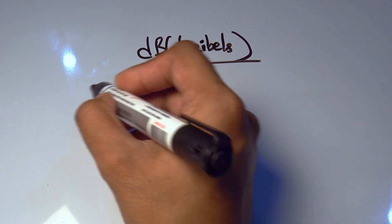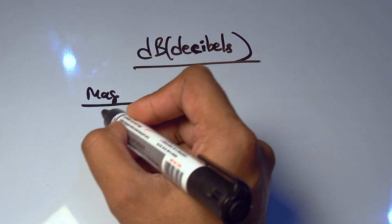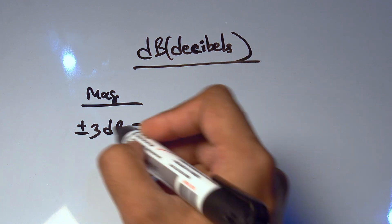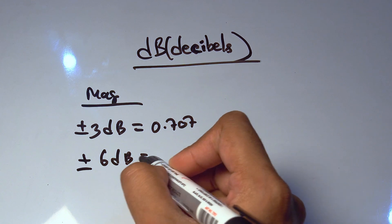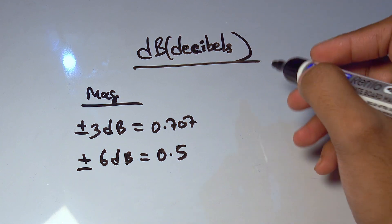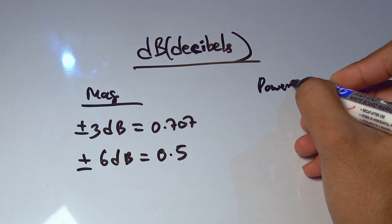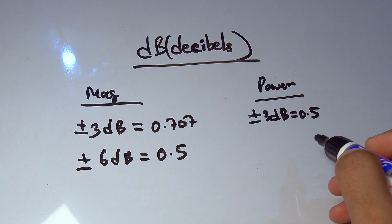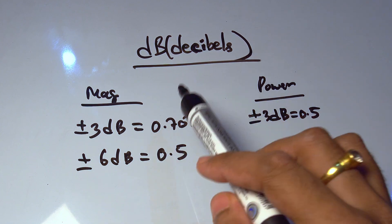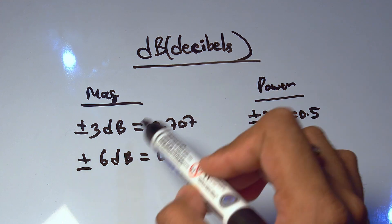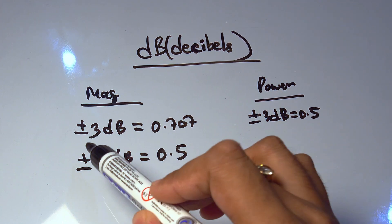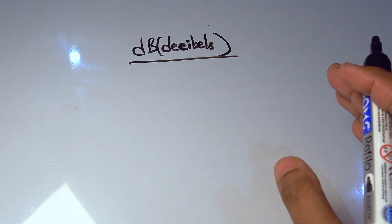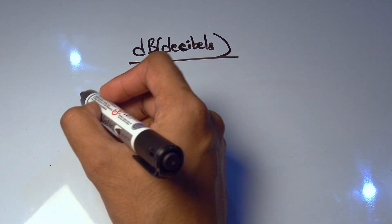So we can say that for magnitudes such as volts, plus or minus 3dB is basically 0.707, or plus minus 6dB is 0.5, half the value. But for power, plus minus 3dB is 0.5. So don't confuse between magnitude and power. When we are talking about voltage or current, then we are talking about magnitudes and we will take these values: minus 3dB or plus 3dB is 0.707, or plus minus 6dB is 0.5, half the value.